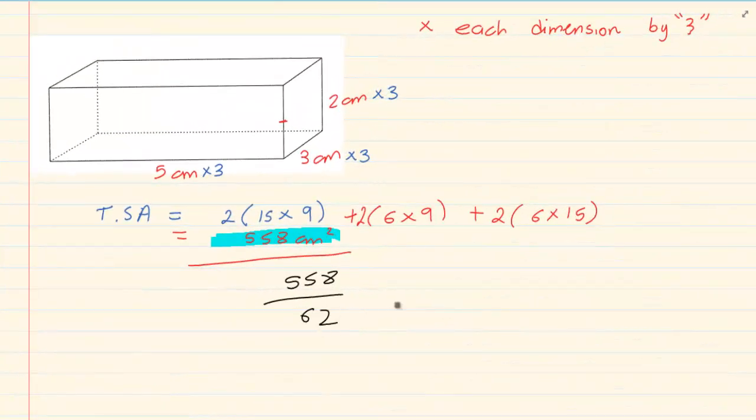So we would have 558 divided by 62, which would equal to 9. Now what do you notice? What is the link between 9 and 3? The link between 9 and 3 is equal to 3 squared.